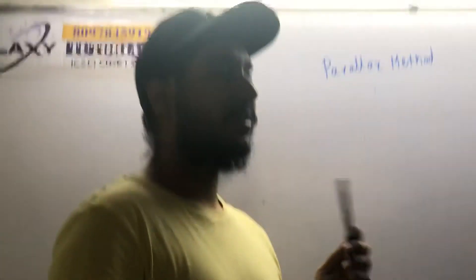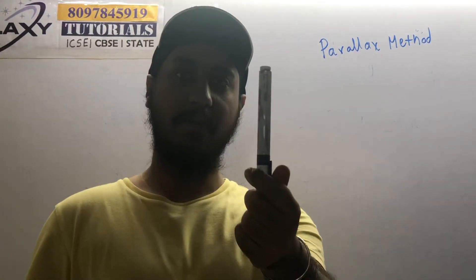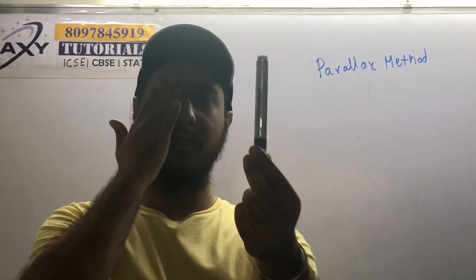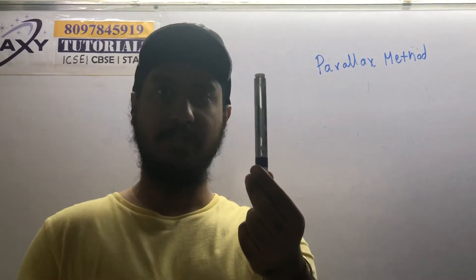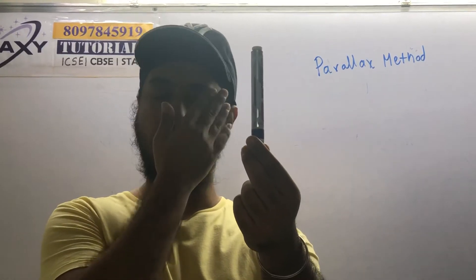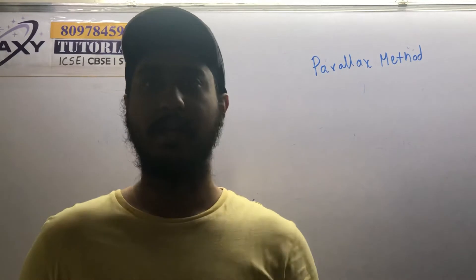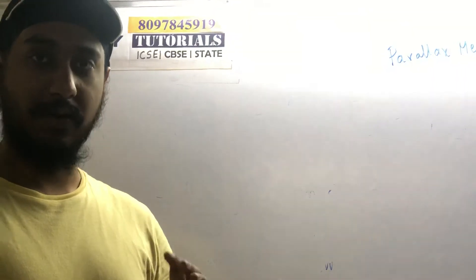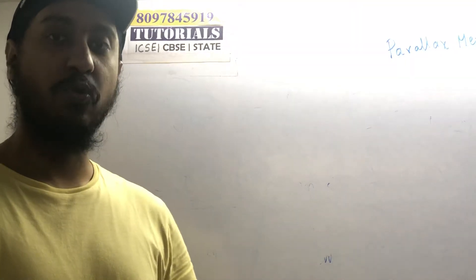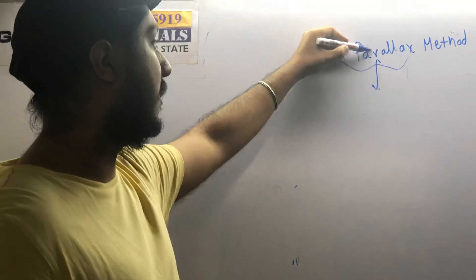First, I will tell you what parallax is. Parallax is the name given to a phenomenon that happens when you close one of your eyes. Keep a pen or marker in front of your eye, close one eye and observe it carefully, then alternately close the other eye. You will observe that the marker appears to shift left and right. This shifting of the position of an object due to the relative motion of the observer is known as the parallax effect.